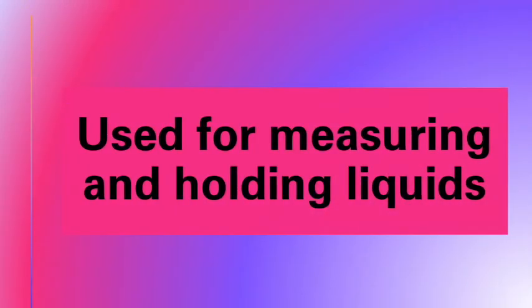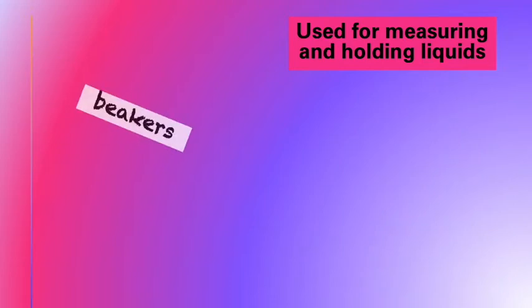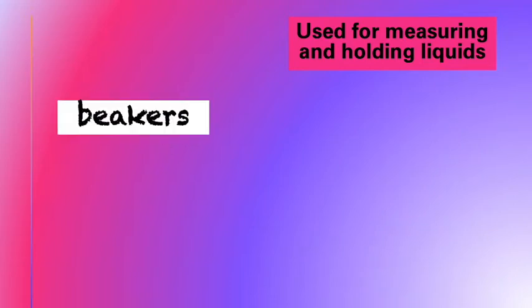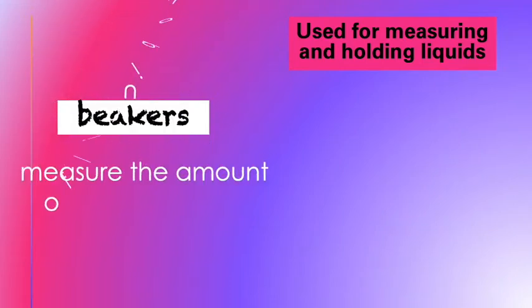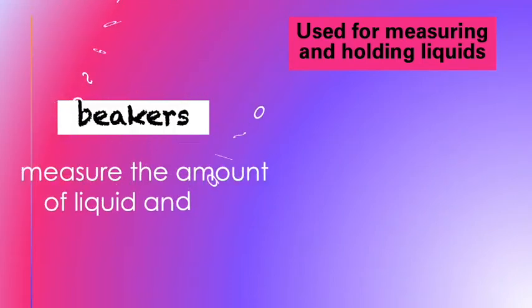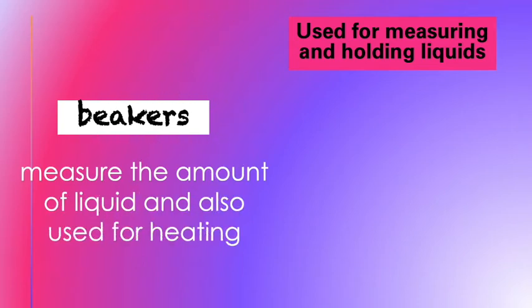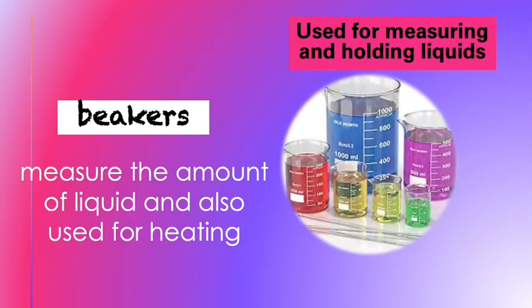Next category is used for measuring and holding liquids. The first one is the beaker. It is used to measure the amount of liquid and also used for heating. There are different sizes of beakers.